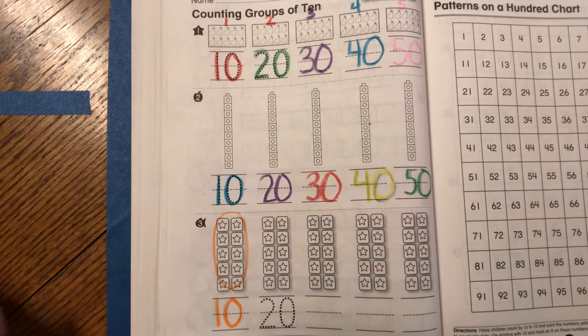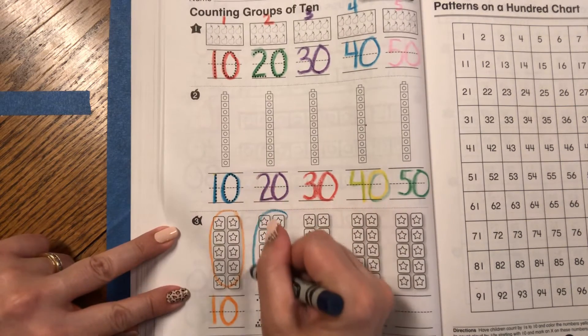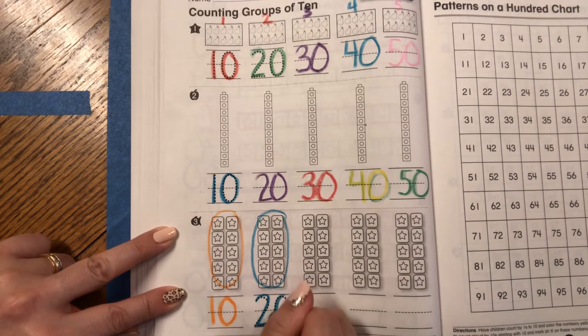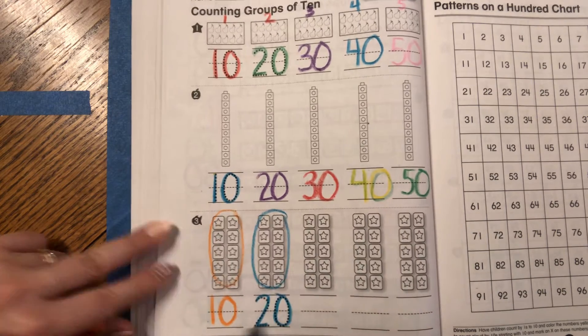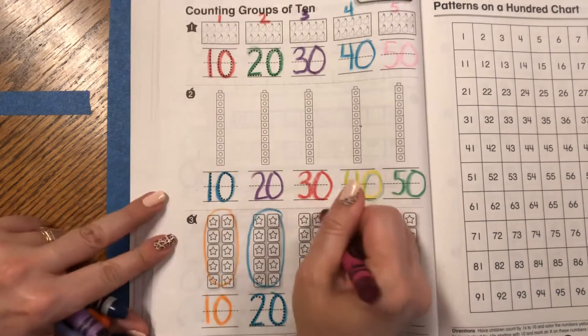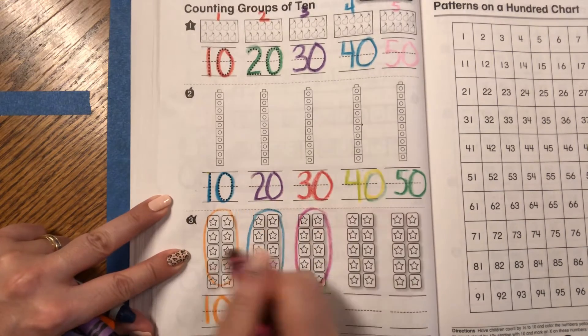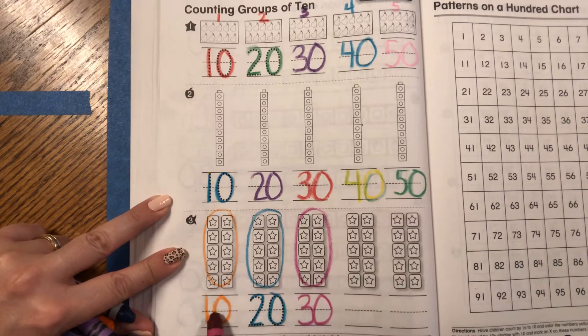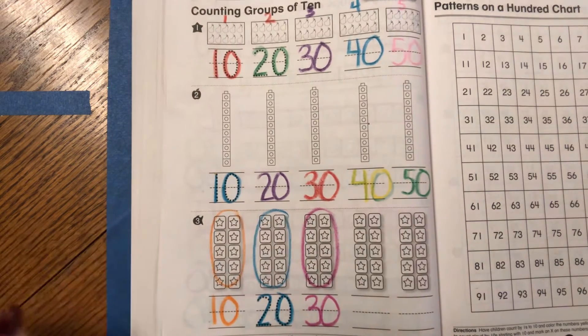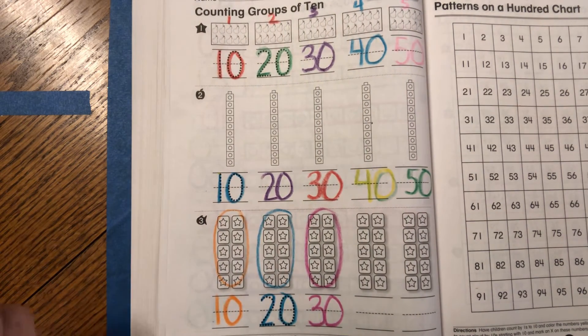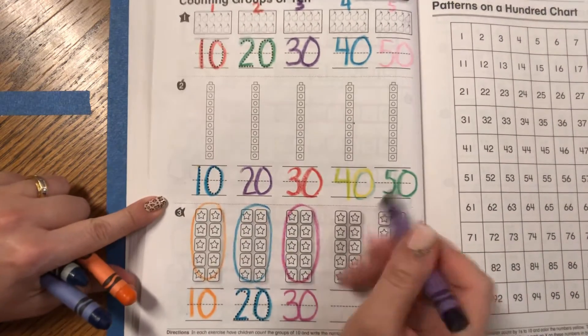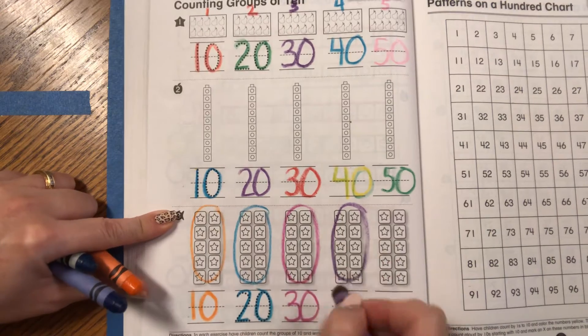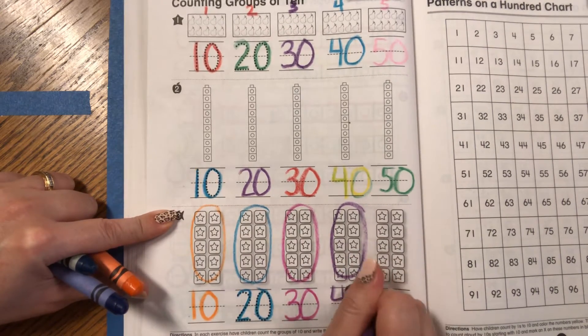Good job. I know this is a group of 10, so I can circle it. And this is two groups of 10. 10, 20. Now here's another group of 10. One, two, three groups of 10. That's 30. 10, 20, 30. Now here's another group of 10. Circle it. One, two, three, four, 10s. 40.